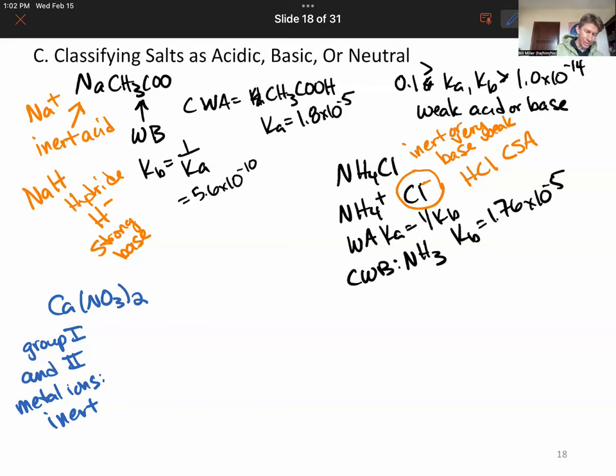We have an inert acid for a calcium ion. Then nitrate ion, NO3 minus, is going to be similar to the chloride ion. It's going to have a conjugate that's HNO3, which is a strong acid. Nitrate will be an inert base.